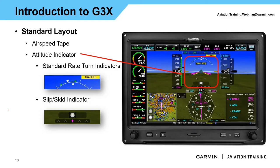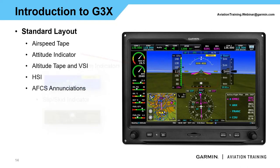Down below is your slip/skid indicator. This is one difference compared to our certified equipment. Compared to G1000, TXI, G500, or G600, normally the slip/skid is at the roll indicator at the top. In the case of the G3X, we actually have the separate ball down at the bottom above the HSI. On the right-hand side is our altitude tape and vertical speed indicator — you can see the baro setting down below, altitude up at the top, and vertical speed to the right.